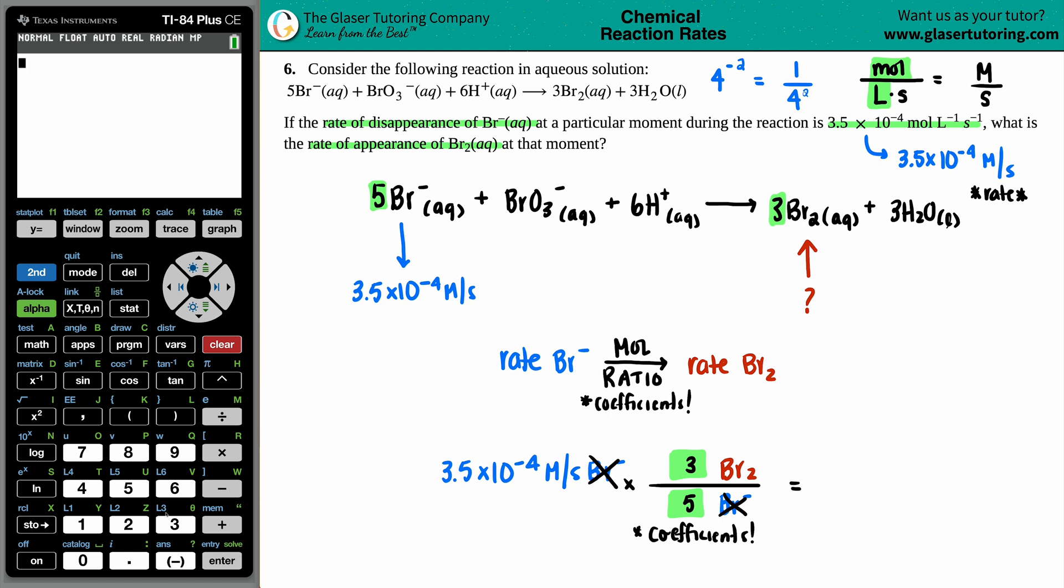Then let's just do the math. 3.5, second comma, that means times 10 to the negative fourth, times 3, divided by 5. Love calculator. It will do everything for you. You don't have to use parentheses if you're doing the EE button. And there it is, 2.1 times 10 to the negative fourth. And that's molarity per second of the Br2. And that is our final answer. There you go.